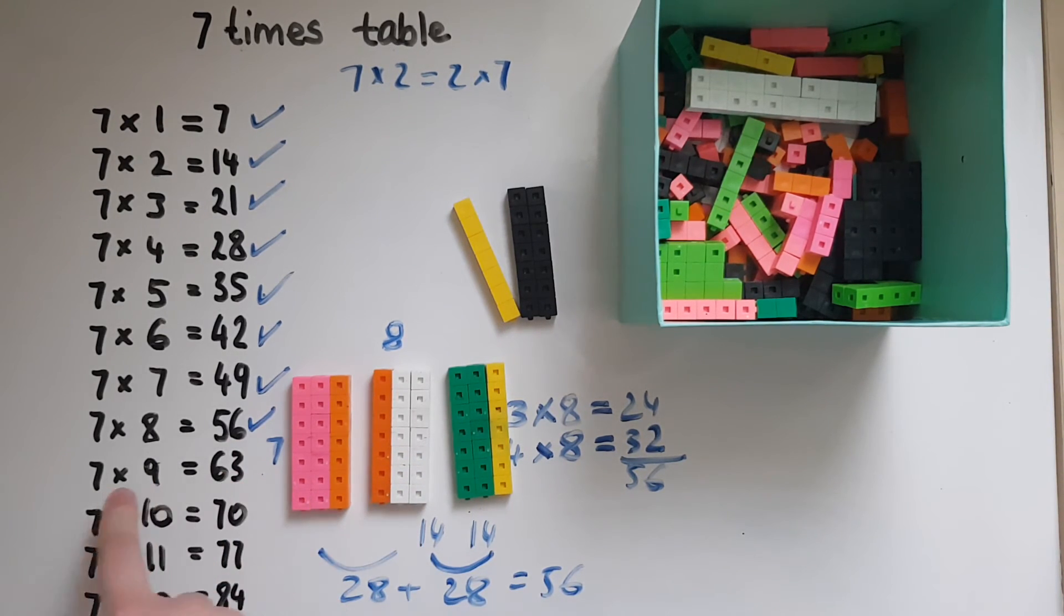Seven times ten, as we've mentioned before, is seven and add a zero at the end, so that makes 70. And it's nice and easy to work out. Seven times eleven is 77. Again, that's nice and easy to work out, so the digit repeats itself twice.